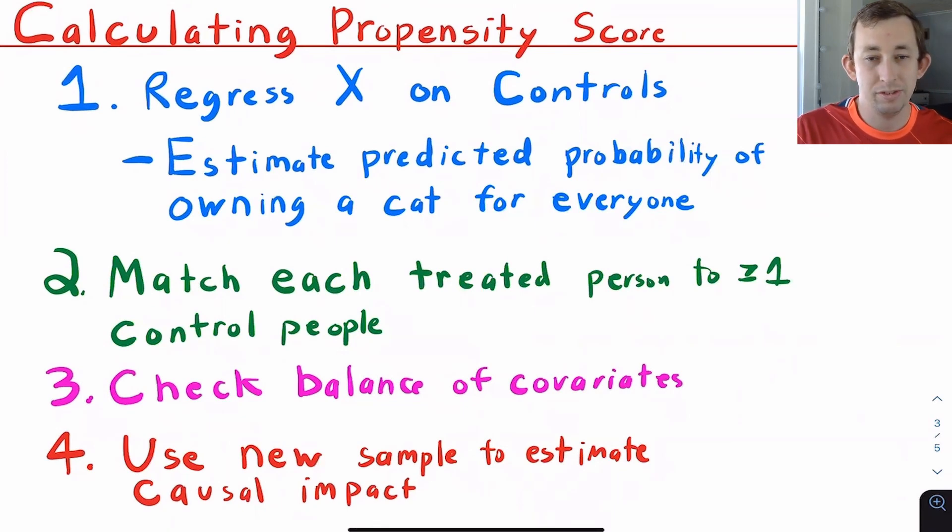Once we've done that, once we've separated into our treatment or control group, we're going to do that balance test that we talked about in the last video, just to make sure that those treatment and the control groups are actually comparable, so that when we get our average treatment effect, we're pretty confident of the validity of that estimate.